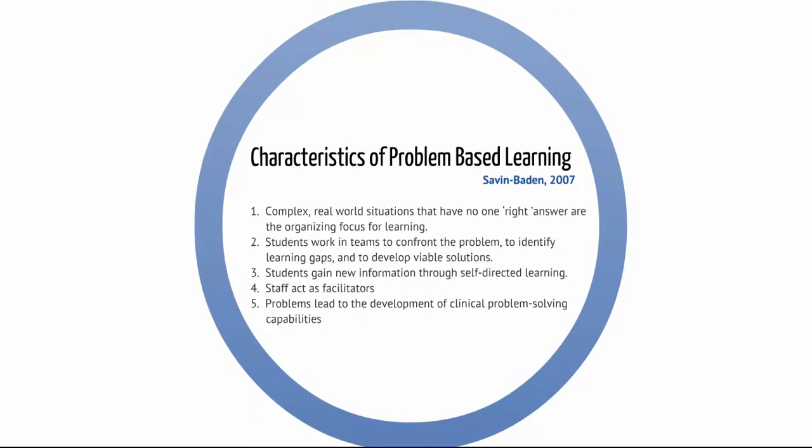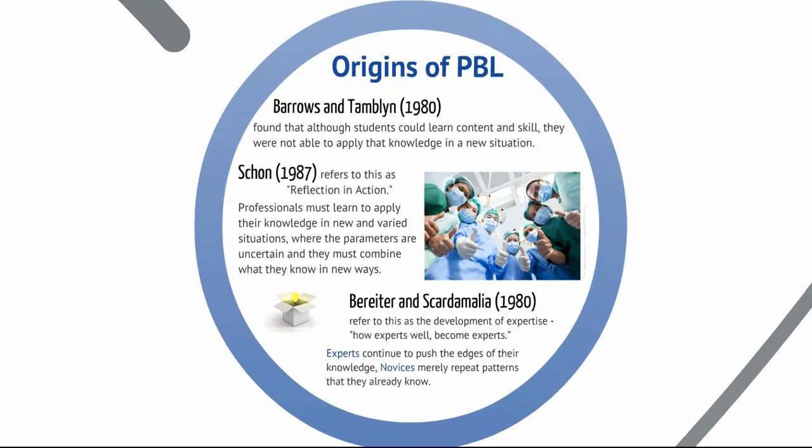Savin-Baden refers to characteristics of problem-based learning. Complex, real-world situations that have no one right answer are the organizing focus for learning. Students work in teams to confront the problem, identify learning gaps, and develop viable solutions — this is what you'll be doing in your PBL assignment later in the course. Students gain new information through self-directed learning, which you'll be doing each week. Staff act as facilitators, and problems will lead to the development of problem-solving abilities. Over a period of several years, problem-based learning has changed quite a bit — there are many different modalities and there is much diversity in the field.